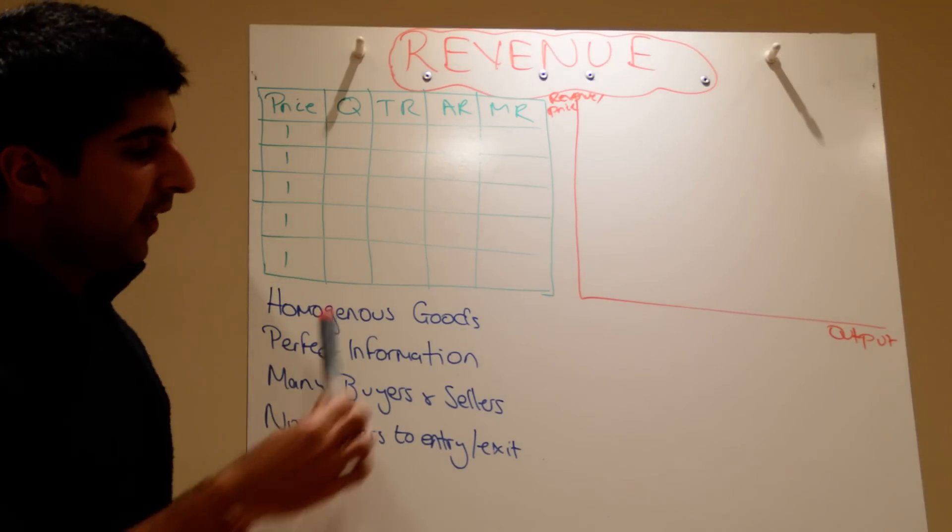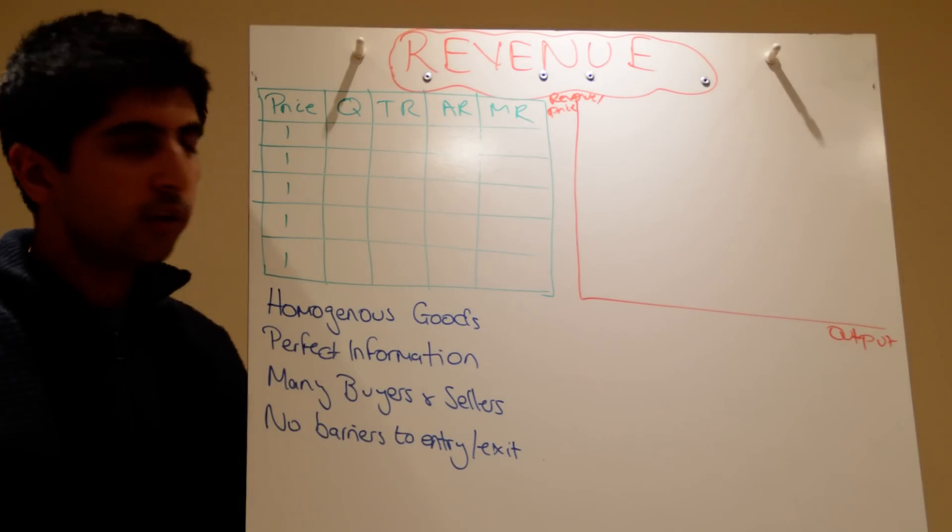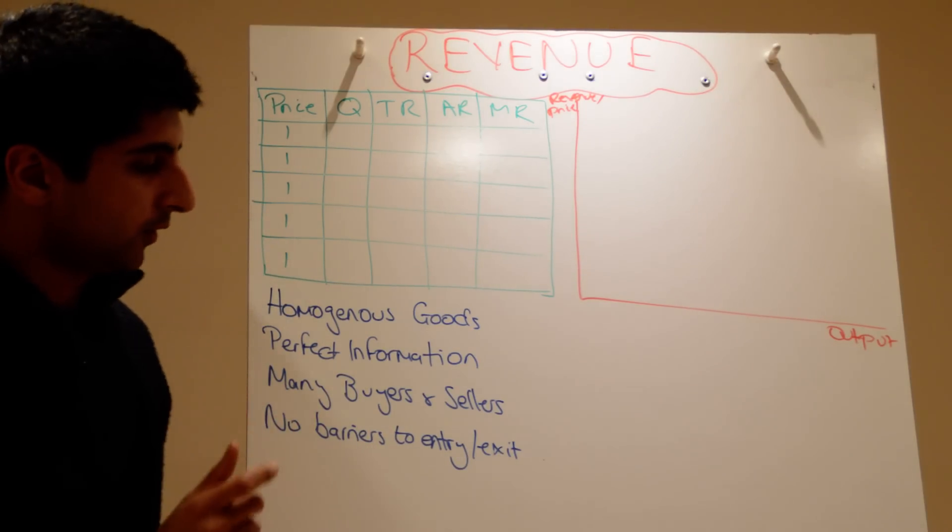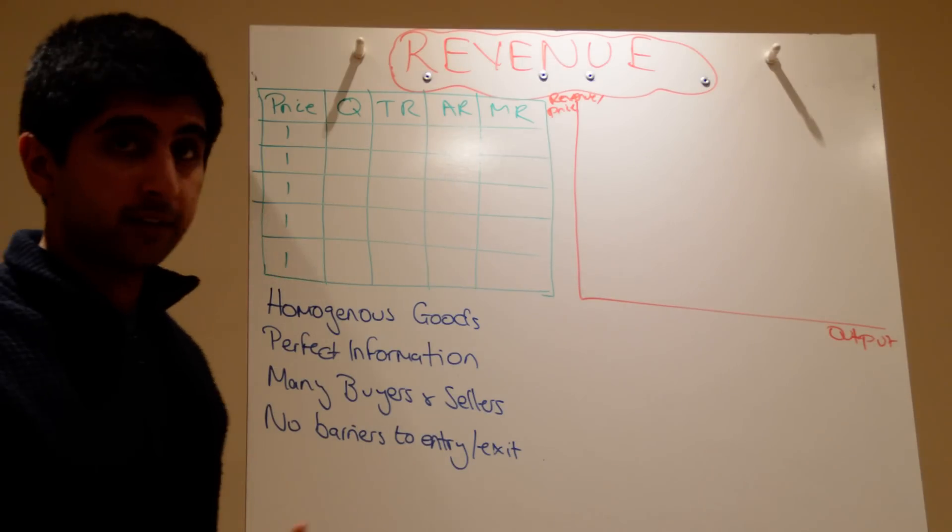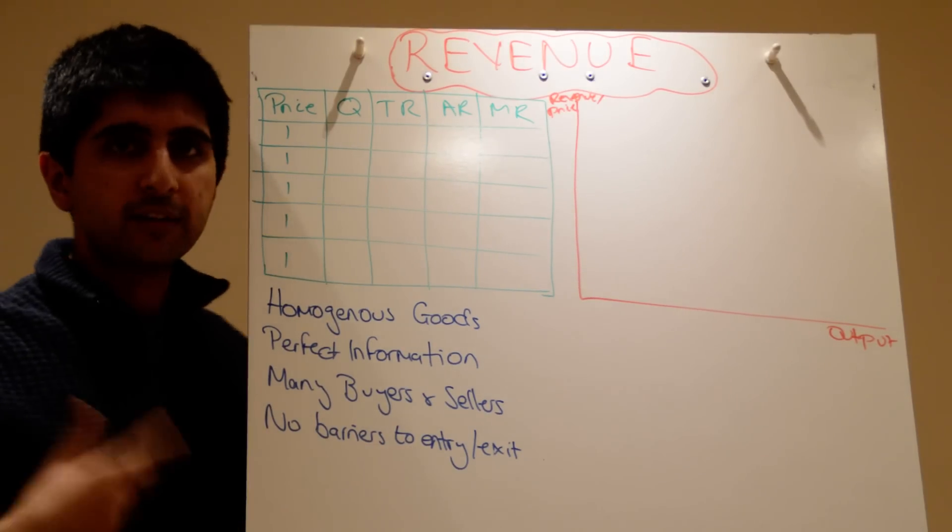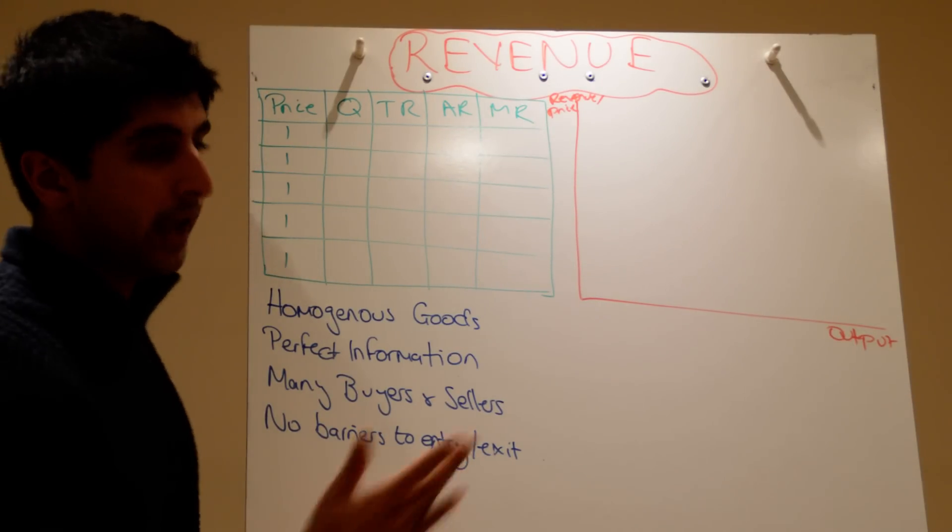In perfect competition these conditions apply: there are homogenous goods - all goods made by firms are exactly the same, identical goods. There's perfect information for both buyers and sellers. There are many buyers and sellers, and there are no barriers to entry. So if firms want to enter the industry they can at no cost. They can also exit at no cost.